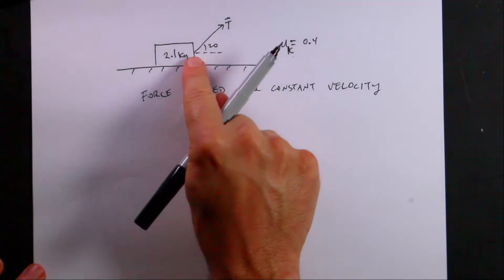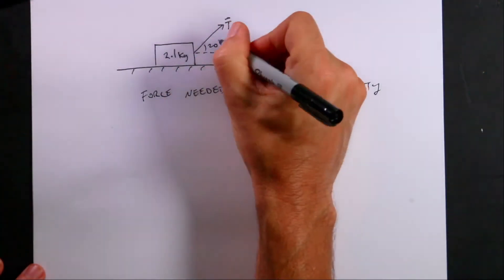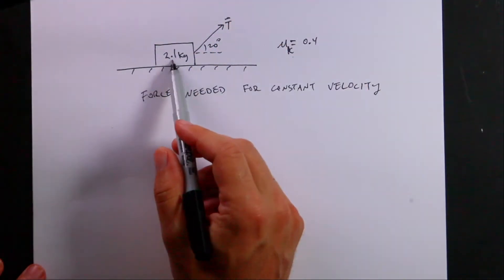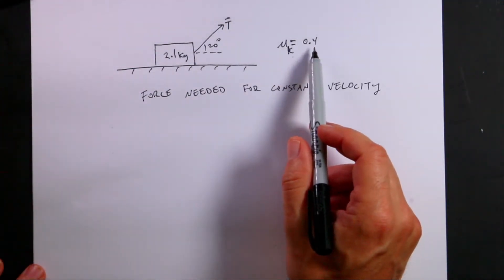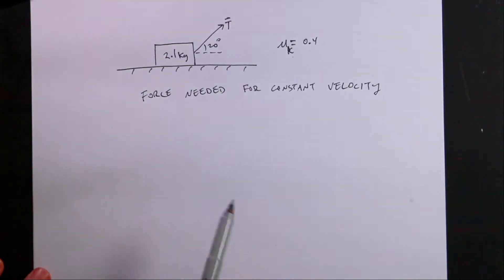The question is, if I pull with a rope and the angle of the rope is 20 degrees above the horizontal and the block has a mass of 2.1 kilograms, the coefficient of static friction is 0.4, how hard do I need to pull it to move it at a constant velocity?